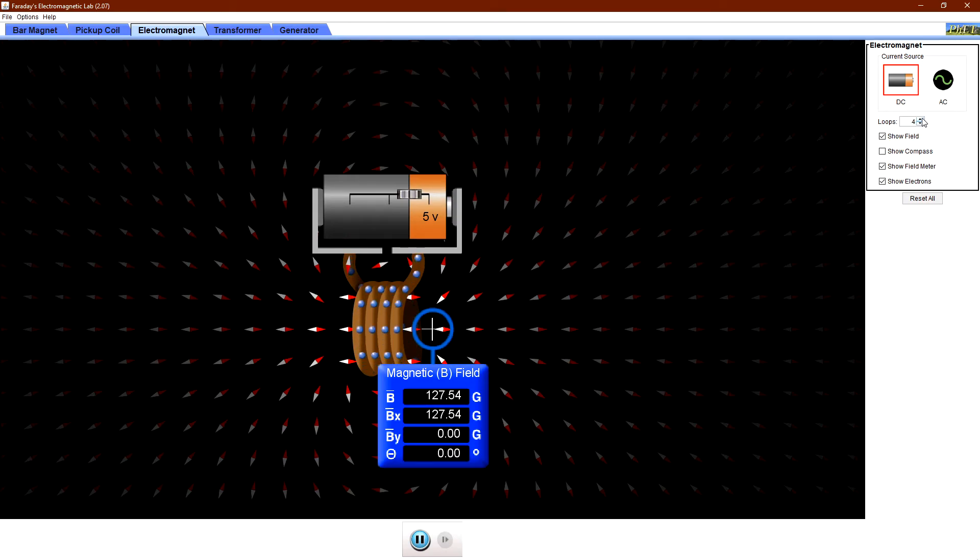Note that if I increase the number of loops, the magnetic field is increased, and if I decrease it, it decreases.